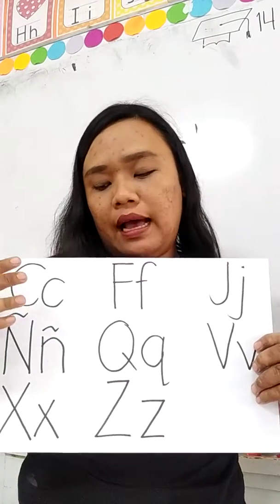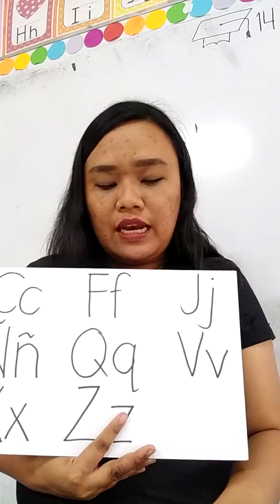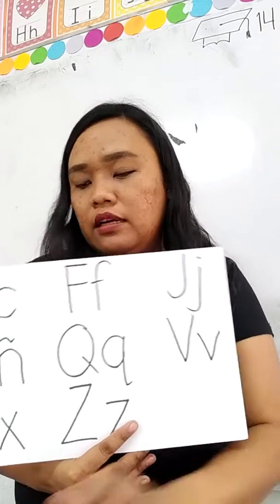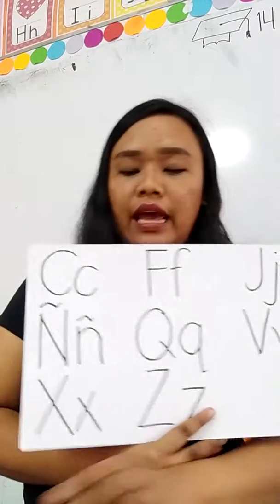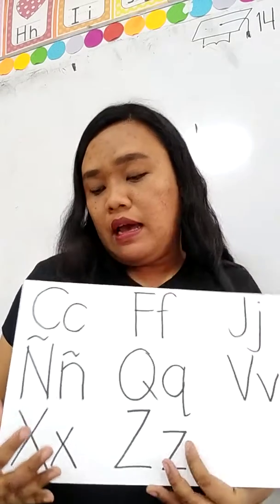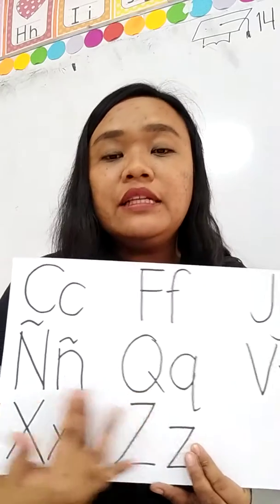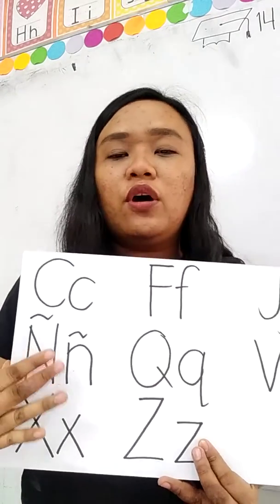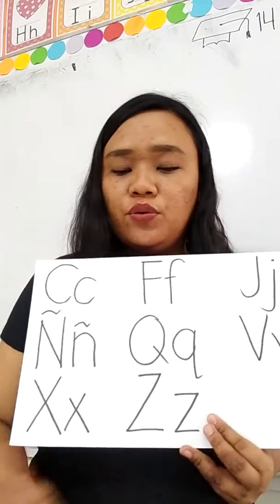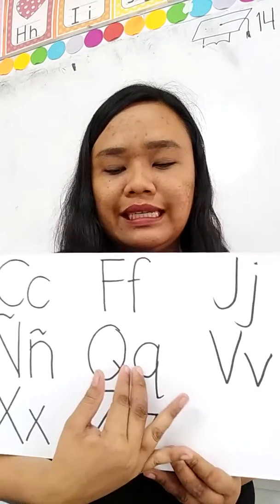Sa letter C, halimbawa, ang pangalan na Carmen, Kathy, or Connie. Sa letter F, meron tayong mga pangalan na Freddy, Farrah, or Fiona. Sa letter J, marami diyan — John, Jocelyn, mga ganyan. Sa letter Ñ (Nye), hindi siya madalas nakikita sa simula ng pangalan, pero sa gitna. Halimbawa, ang pangalang Ninya. Meron rin tayong El Niño, or halimbawa ang apelidong Ordoñez.